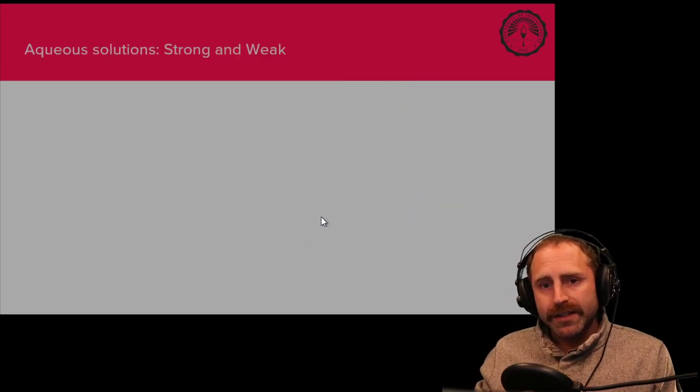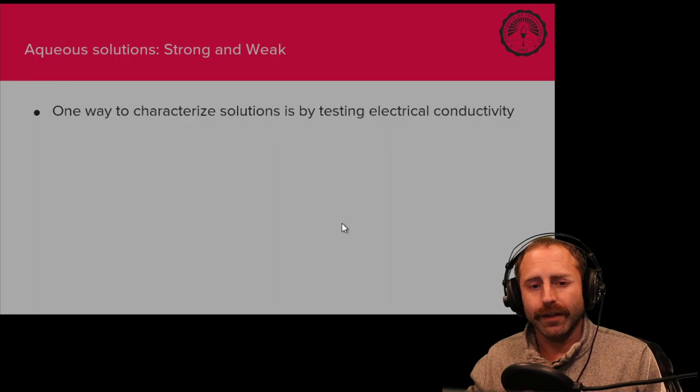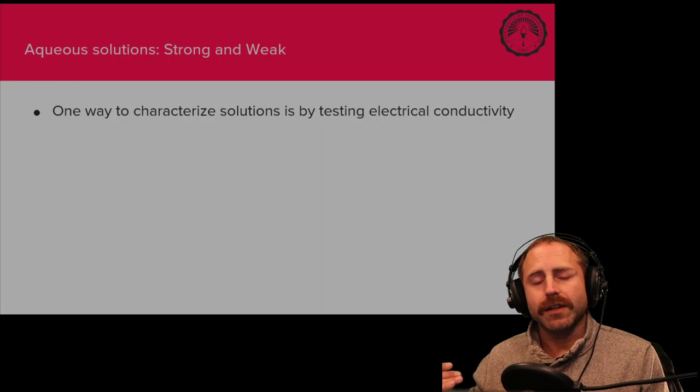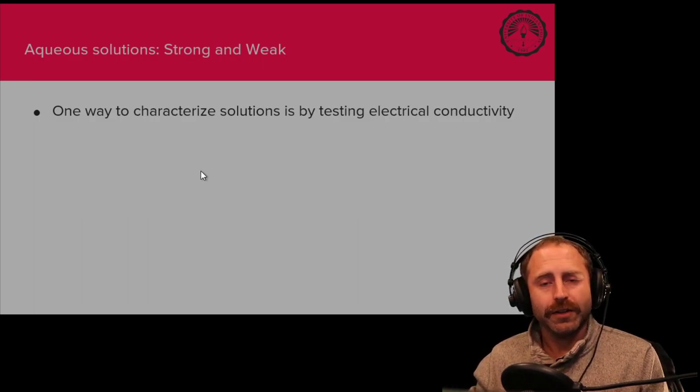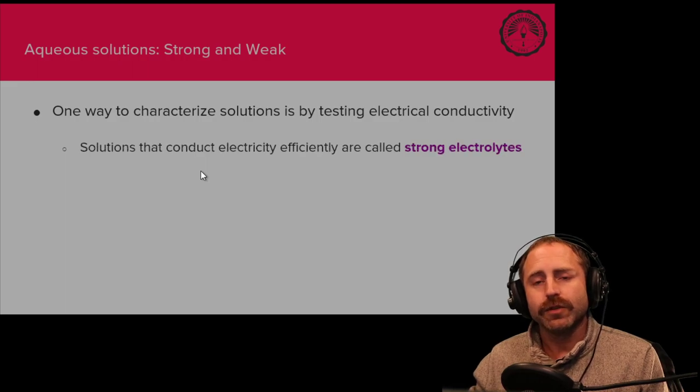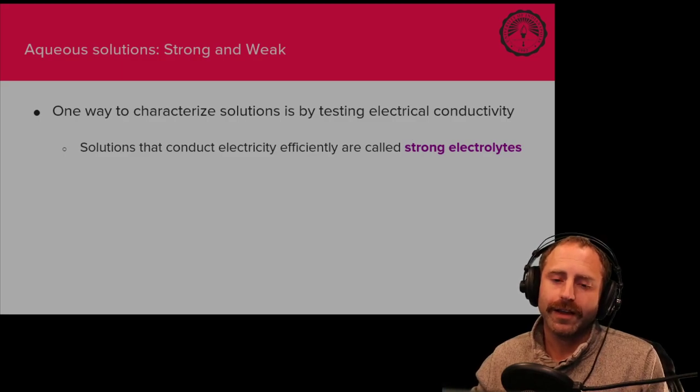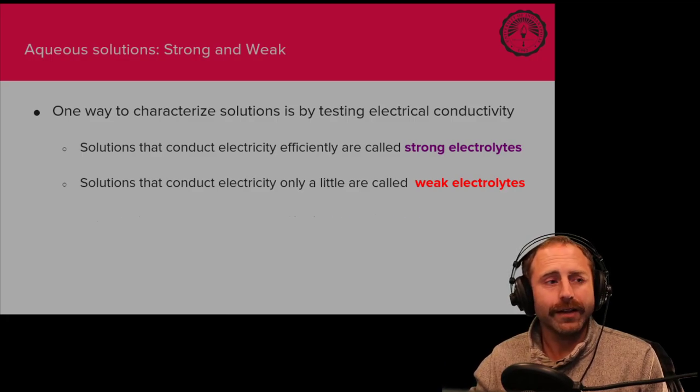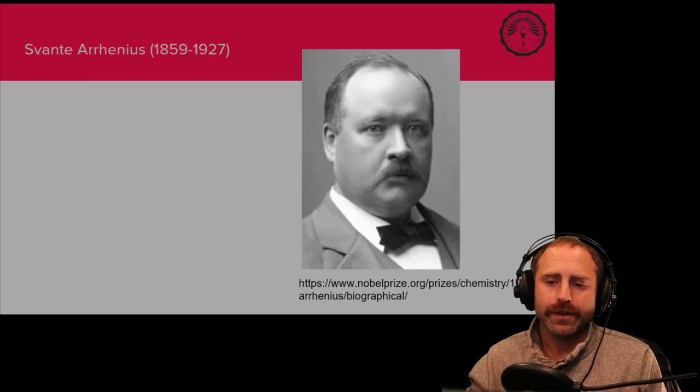So how does that relate to acids and bases? Well, we're getting there. One way that we did early characterization of solutions was to test how much electrical current would actually go through a solution. Solutions that transferred electrical current quite well were called strong electrolytes. And solutions that did rather poorly were called weak electrolytes. And solutions that did nothing were called non-electrolytes.